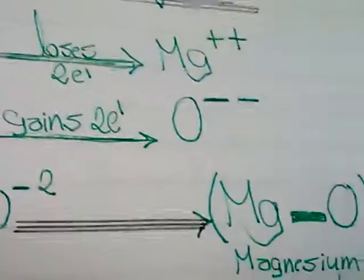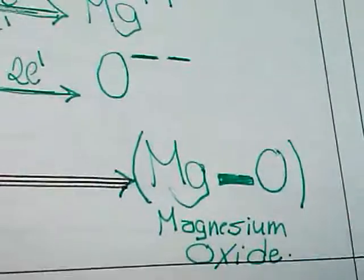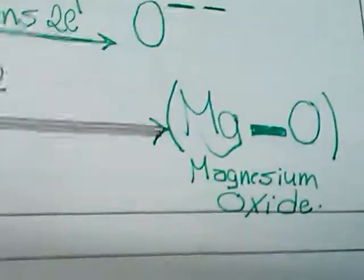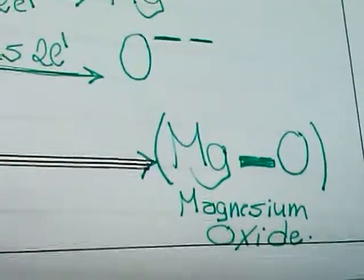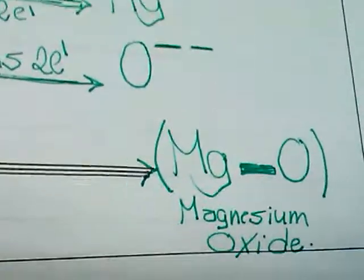Mg positive plus O negative to obtain MgO, and they are linked together by ionic bond. MgO is a compound which is called magnesium oxide.